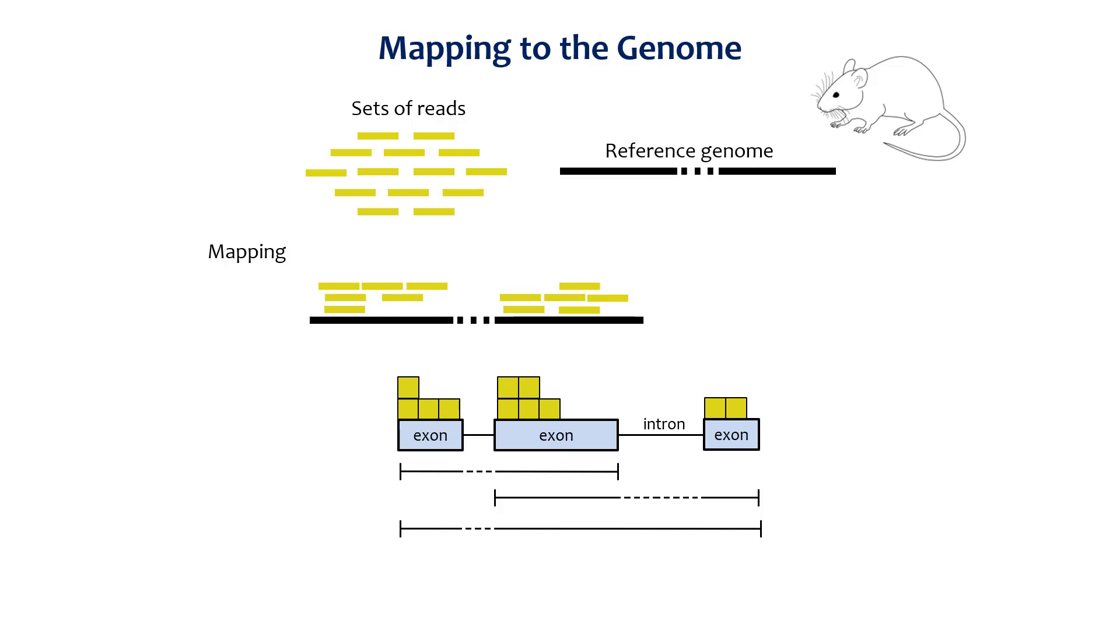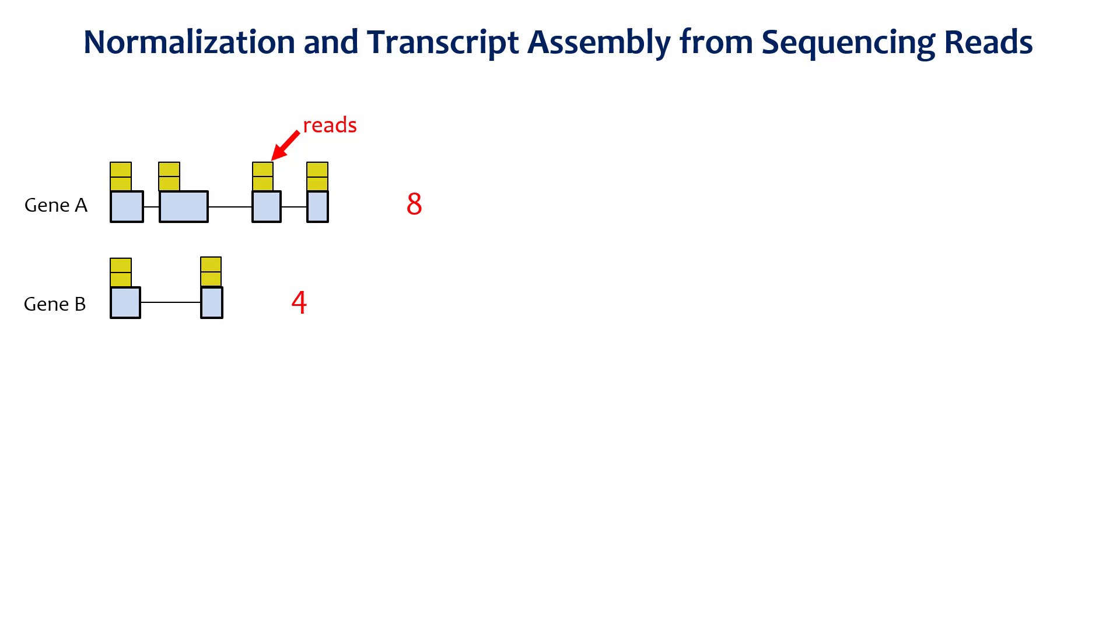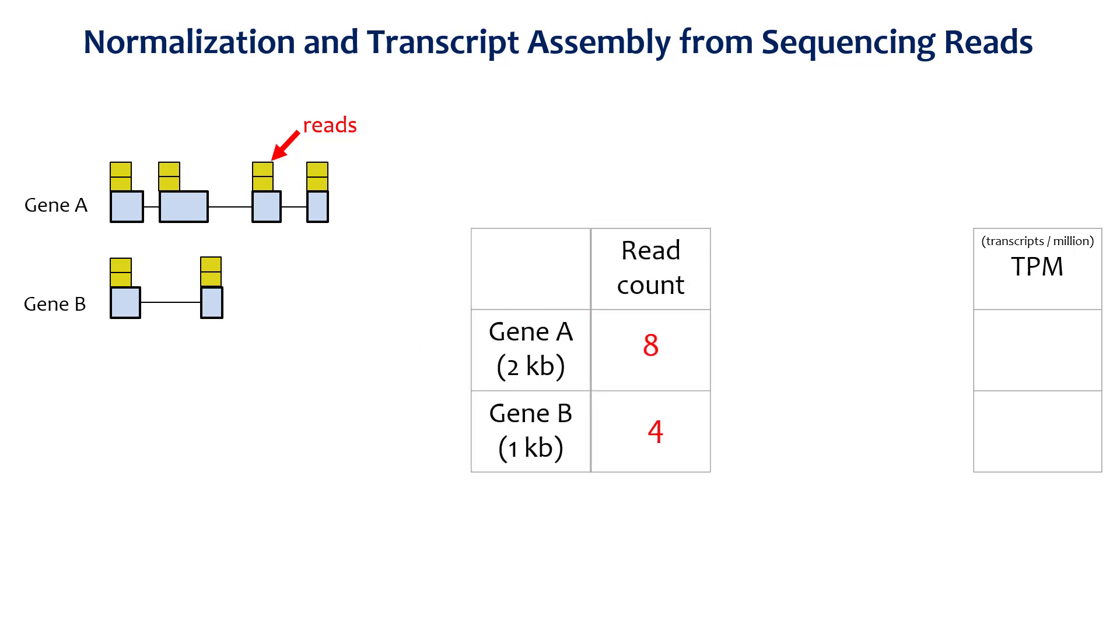To normalize the values, read counts are converted to a unit called TPM, or transcripts per million. To calculate TPM, first divide the read counts by the length of each gene in kilobases, which is 1000 bases. More fragments will be produced from a longer gene than a shorter one, even if the two produce the same number of transcripts, so normalizing for gene length is necessary.